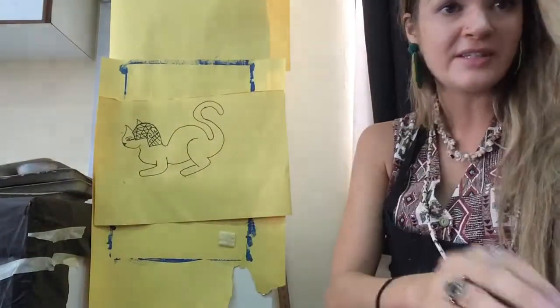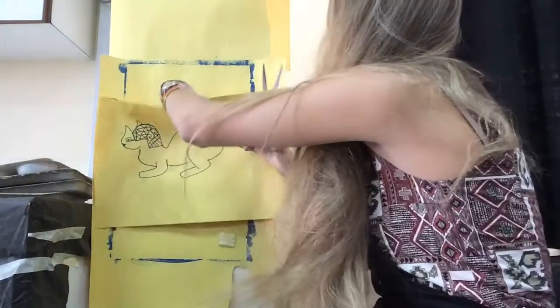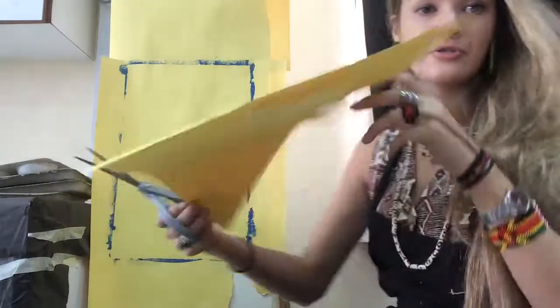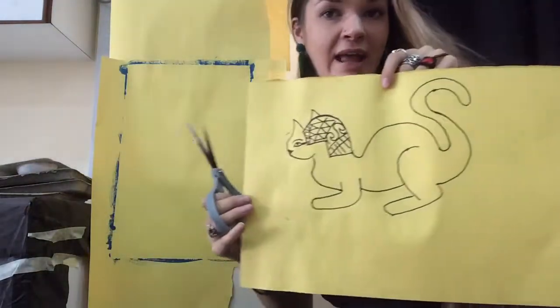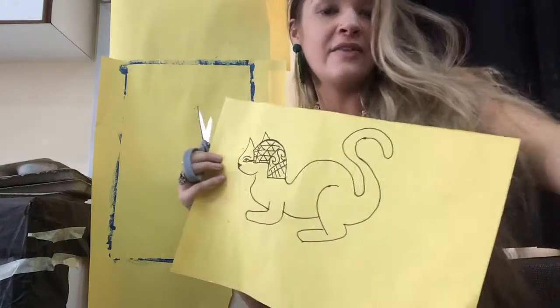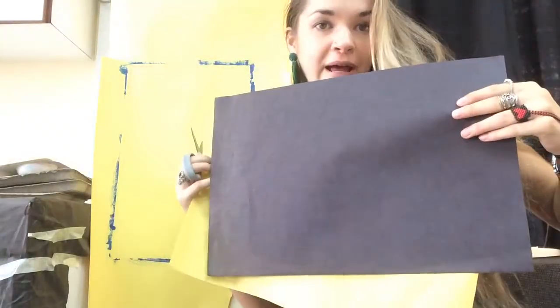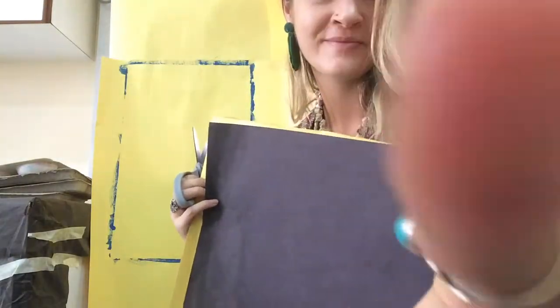Now I'm going to take my scissors and cut my cat out. I can add more color and designs to the cat, and then glue it to the black background.